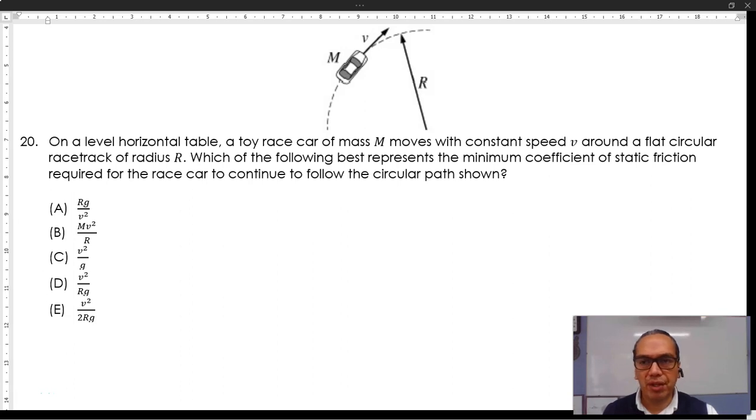20. On a level horizontal table, a toy race car of mass m moves with constant velocity v around a flat circular racetrack of radius r. Which of the following best represents the minimum coefficient of static friction required for the race car to continue to follow the circular path shown?